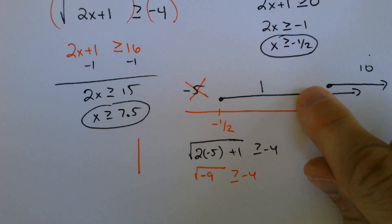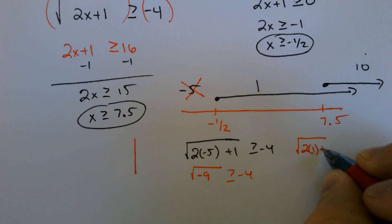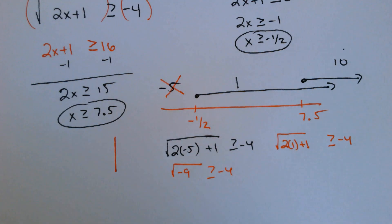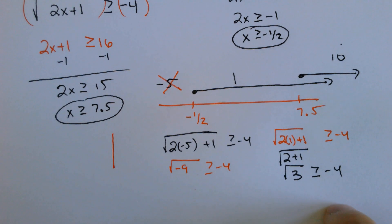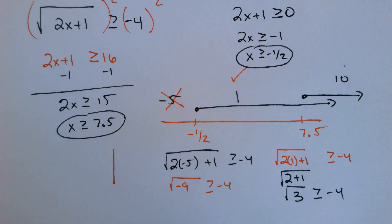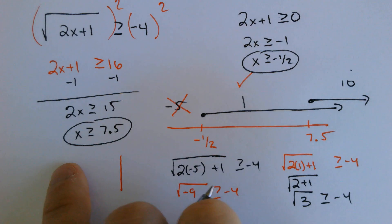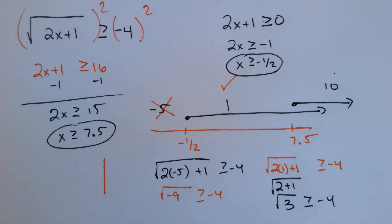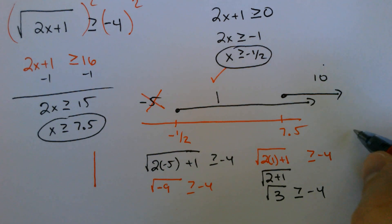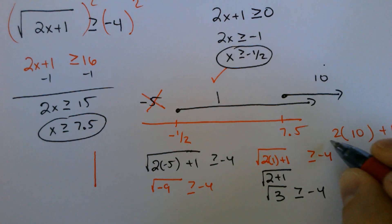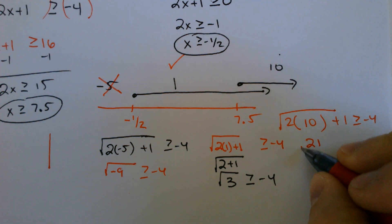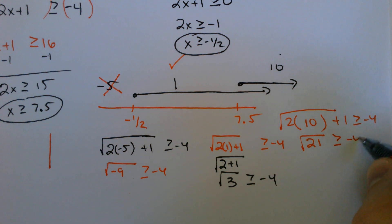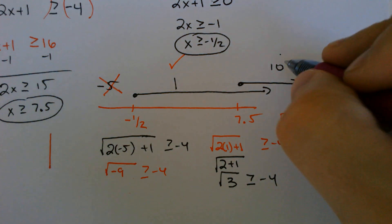The number 1: if we plug in 1, we end up with the square root of 2 times 1 plus 1. Is that greater than or equal to negative 4? The answer is 2 plus 1 is 3. The square root of 3 is positive, and any positive number is greater than or equal to negative 4. So this actually worked. Now the 10 — we expect the 10 to work. So the square root of 2 times 10 plus 1: is that bigger than or equal to negative 4? Well, that would be the square root of 21. The square root of 21 is positive, like 4 point something. And that is bigger than negative 4 as well. So that worked as well.